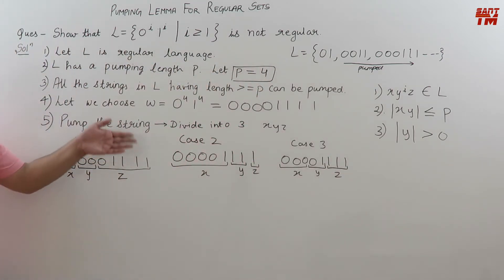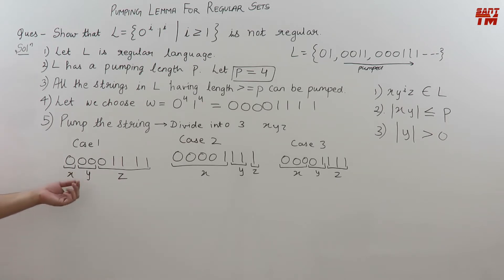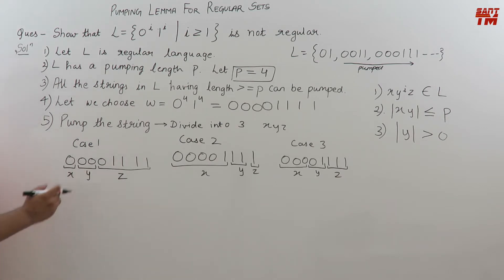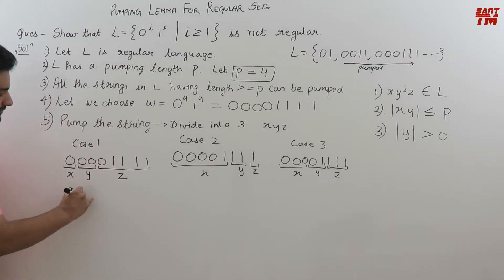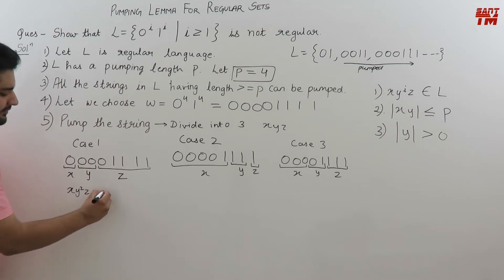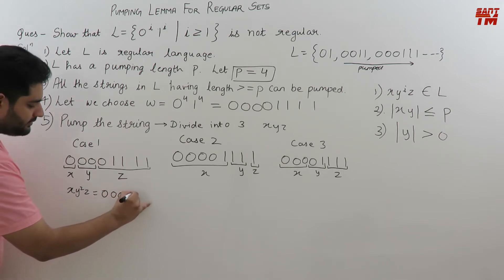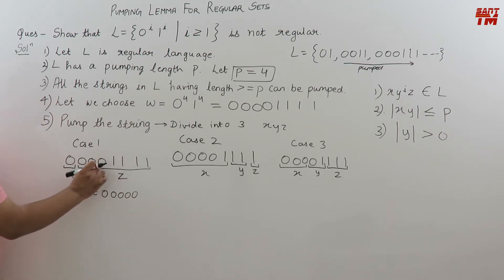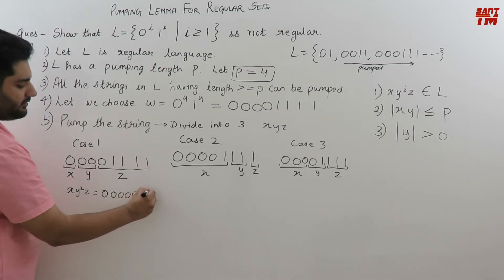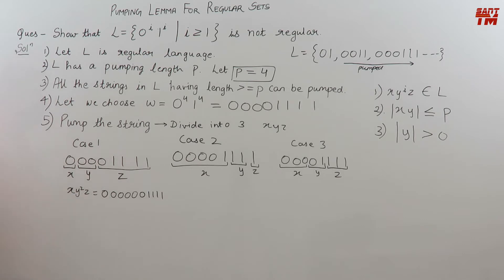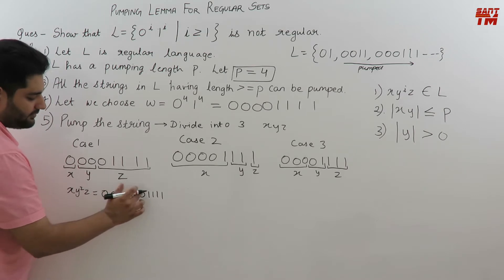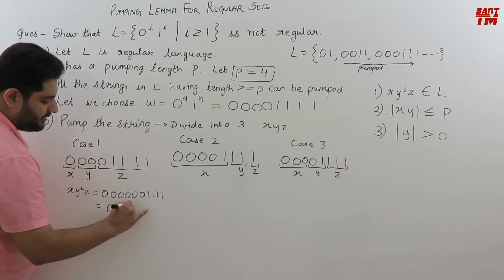So now we can divide the string into three cases, and each case can be pumped. How is pumping done? We increase the power of Y. Suppose Y has 2 zeros. If I increase the power of Y by making it Y squared, then X remains as 1 zero, Y squared gives 4 zeros, and Z is the remaining zero plus 4 ones. The string after pumping in case 1 becomes 6 zeros and 4 ones — 0 raised to the power 6, 1 raised to the power 4.